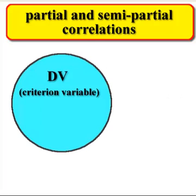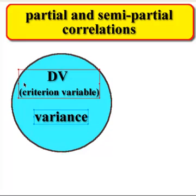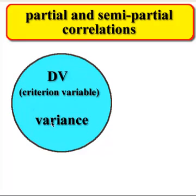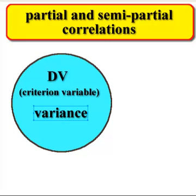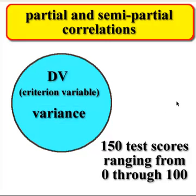So let's take a DV, also known as the criterion variable. That is what you're going to try to predict. Now this circle, this Venn diagram, represents the variance in the scores. So let's pretend we had 150 test scores ranging from 0 to 100.